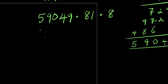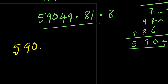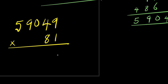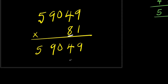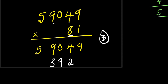Now we multiply fifty-nine thousand and forty-nine by eighty-one. Starting the long multiplication: one times nine is nine, one times four is four, one times zero is zero, one times nine is nine, one times five is five. Then eight times nine is seventy-two, write two carry seven; eight times four is thirty-two, plus seven is thirty-nine, write nine carry three; eight times zero is zero, plus three is three; eight times nine is seventy-two, write two carry seven; eight times five is forty, plus seven is forty-seven.